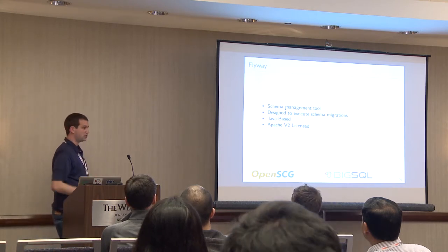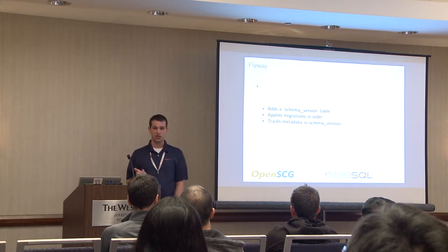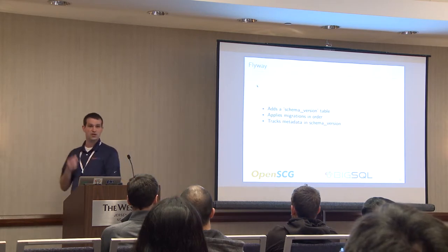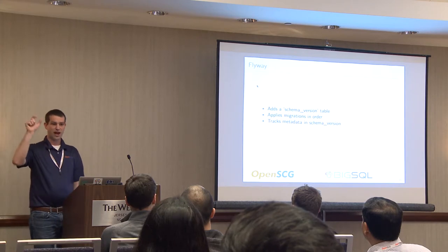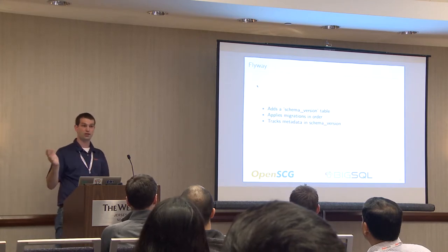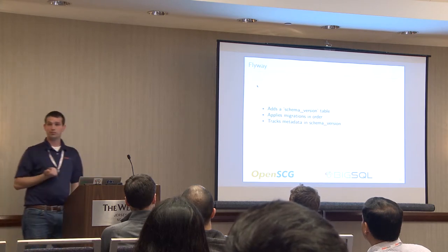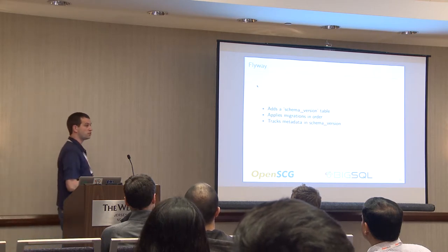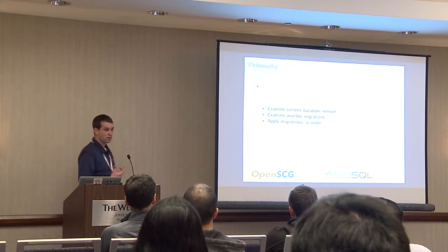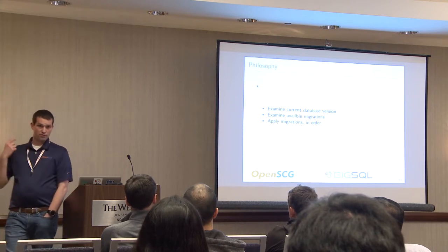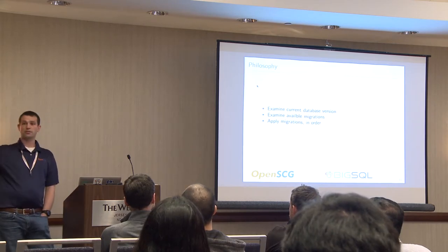Flyway adds metadata via a schema version table. When you run it, it executes your migrations in order and tracks when they were applied, what file they came from, whether they succeeded or failed, and whether they rolled back. It's simple — developers can download it and run it on their machines, and you can run it in production. When it runs, it looks at the schema version table, sees you're at version two, notices version 15 is available, and runs everything in the proper order.